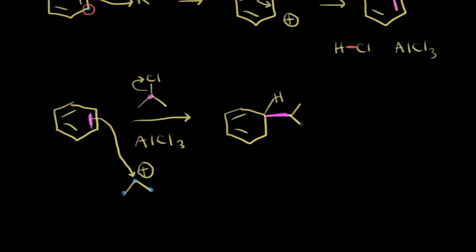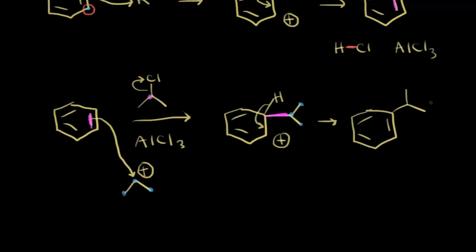In the last step, deprotonation of our sigma complex removes the plus 1 formal charge and reforms our aromatic ring. The electrons move in to form the product: our aromatic ring with an isopropyl group coming off of it. We form isopropylbenzene as our final product.